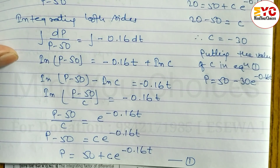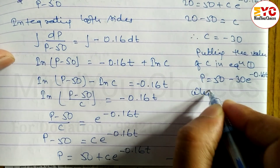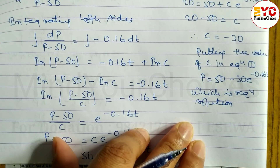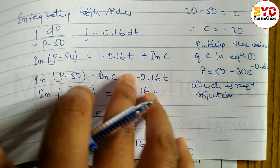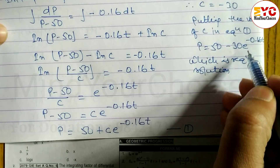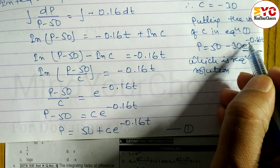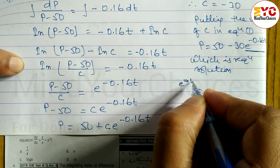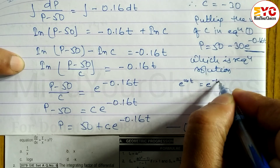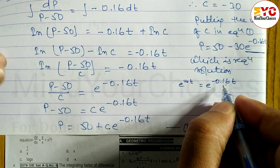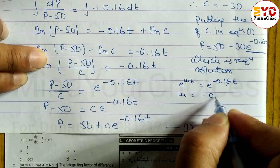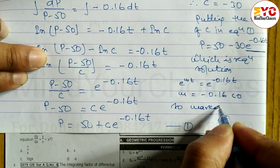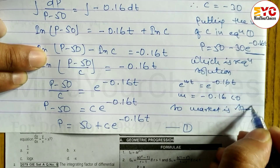Now we check whether the market is stable. Comparing with the standard form e to the power of mt, we identify m equals negative 0.16, which is less than 0. Therefore the market is stable.